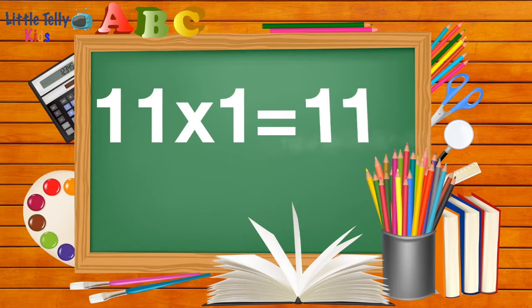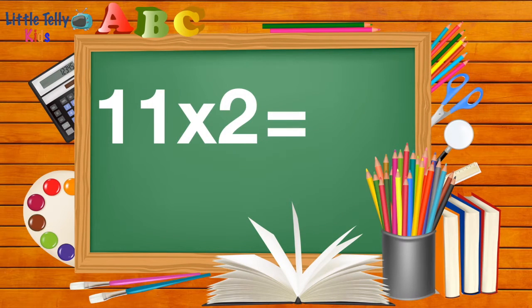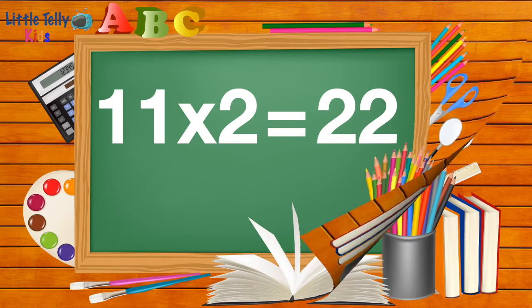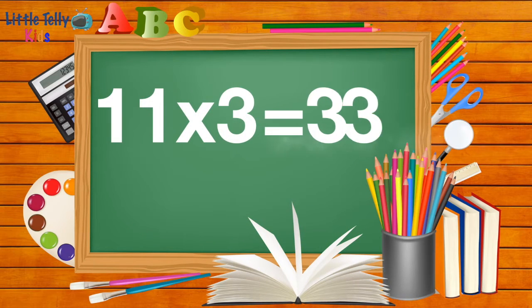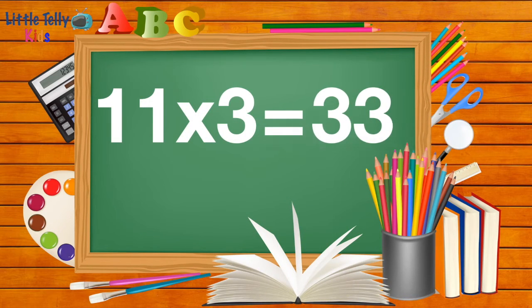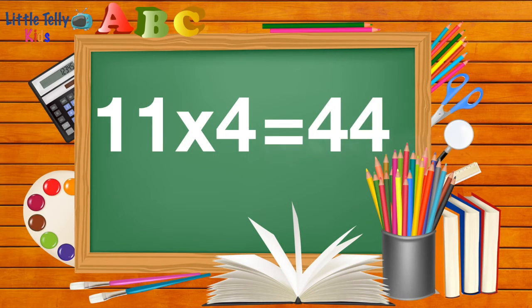Eleven ones are eleven. Eleven twos are twenty-two. Eleven threes are thirty-three. Eleven fours are forty-four.